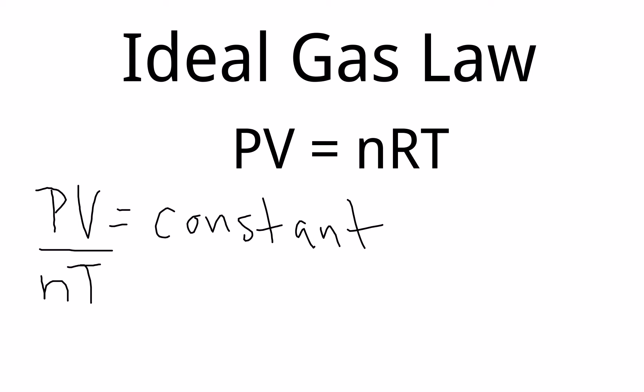And we define that constant. We give it the letter R when we're dealing with the gas laws. And so if I say that PV over NT equals R, I can algebraically rearrange this by multiplying each side through by NT,